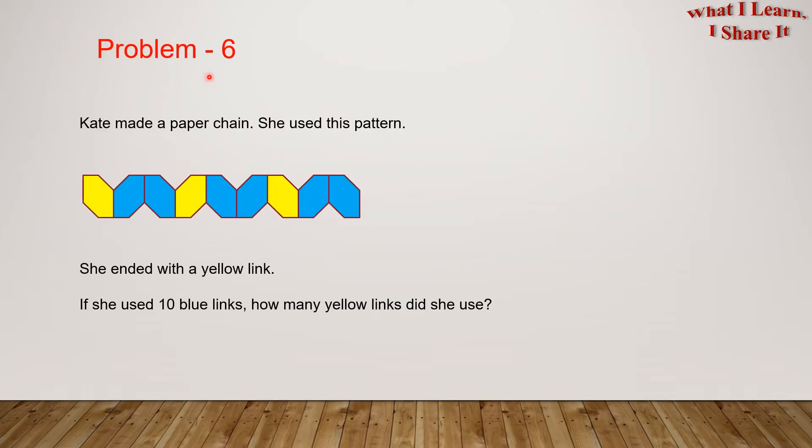Problem six. Kate made a paper chain. She used this pattern. And here's the pattern. She ended with a yellow link. If she used 10 blue links, how many yellow links did she use?